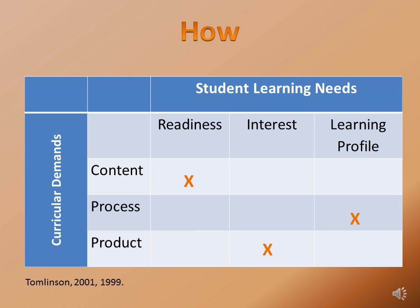Keeping desired results in mind, we can think of student learning needs and curricular demands as a kind of matrix. We can choose to differentiate content by readiness, or product by interest, learning profile by process, and so on in any combination. Sometimes we find that these areas overlap a little as well.